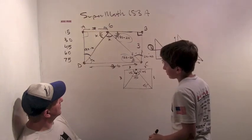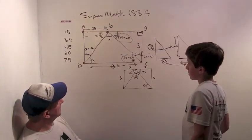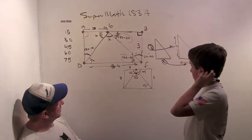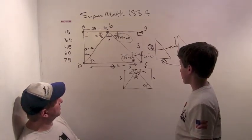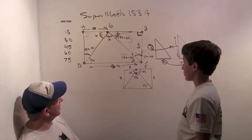90 minus X. Sweet. Well, now we've labeled all the angles in terms of X. Now we've traced the angles as much as we can go. I wonder if that helps us see anything here.